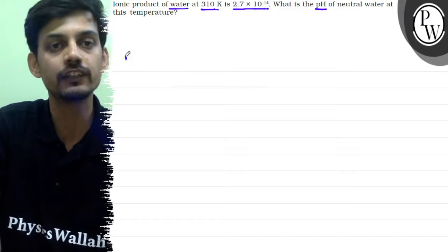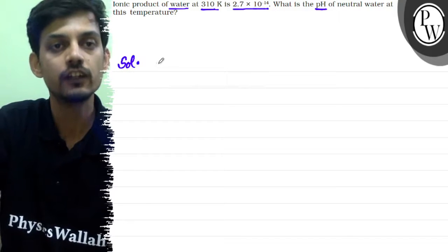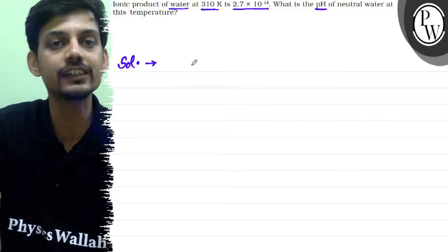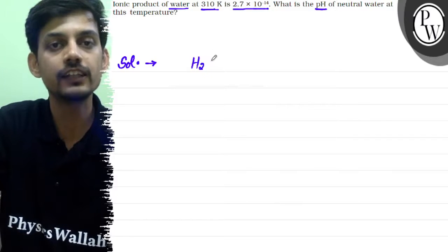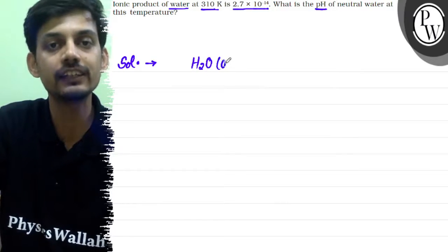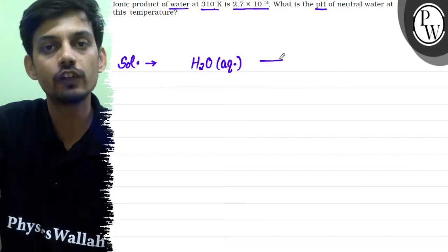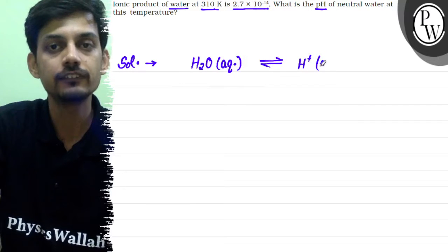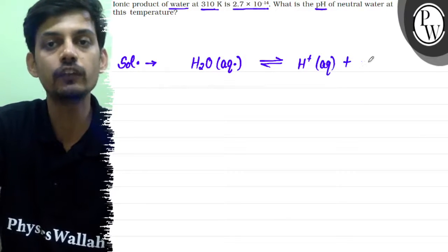Let's solve the question. First of all, let's see the ionization equation of water. Water has self-ionization ability and also behaves as a weak electrolyte. So water undergoes partial ionization to H+ ion and OH- ion.